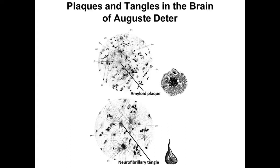The amyloid plaques contain largely a peptide called A-beta, which is carved out of a larger protein called APP. The neurofibrillary tangles are almost entirely comprised of tau, a microtubule binding protein found inside many cells, but especially important for neurons.